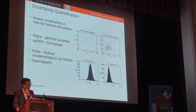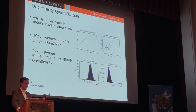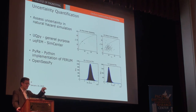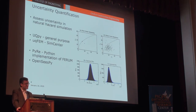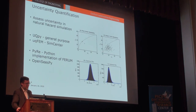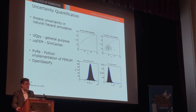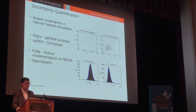There are a lot of uncertainty quantification Python packages that pretty much treat whatever computations you're doing as a black box. For assessing uncertainty at different levels of your natural hazard simulations, there's a Python code that should plug into the workflow. UQPy is a general-purpose uncertainty quantification package developed by Michael Shields and his group. There's also UQFEM through SimCenter, and other packages like PyRED and OpenSeesPy, which have some reliability and optimization modules embedded within them - all within the Python universe.